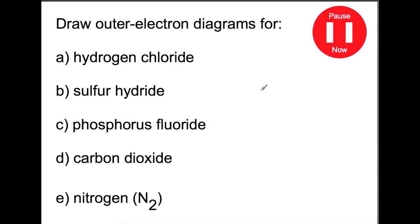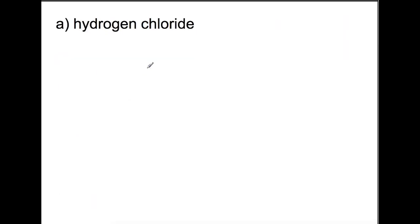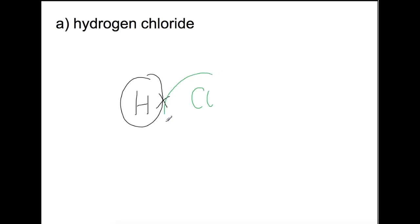Try drawing outer electron diagrams for the following compounds, using page six of your data book to help you. The first compound we're looking at is hydrogen chloride. Hydrogen has one outer electron, which I will represent in black, and chlorine, which I will represent in green, has seven. We need to overlap the shells. Chlorine has seven electrons, which fill as four single electrons before pairing, and this leaves our one single electron paired up with the hydrogen.